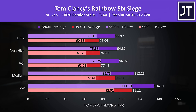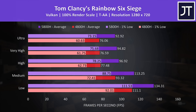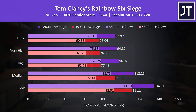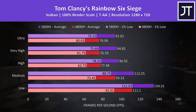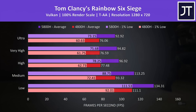Rainbow Six Siege was tested with the game's benchmark using Vulkan. This test saw the biggest performance difference out of all 10 titles tested, with the newer Zen 3 system reaching 22% higher average FPS at the highest ultra setting preset. Even the 1% lows with Zen 3 were near the average FPS from Zen 2 at all setting levels — a reasonable single generation improvement.